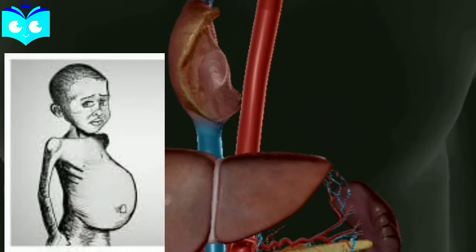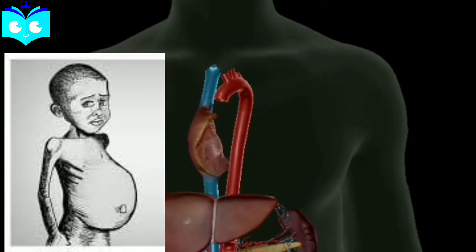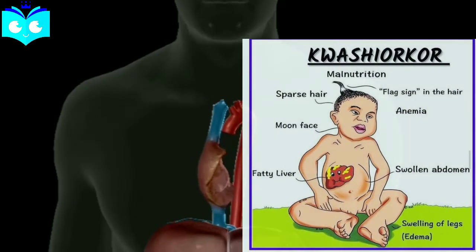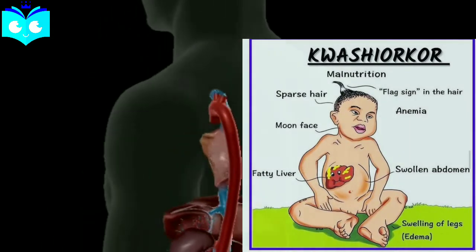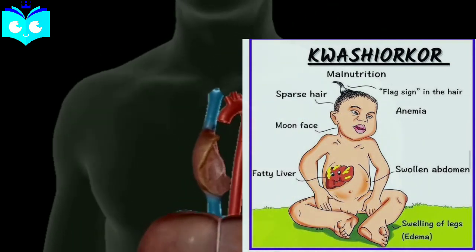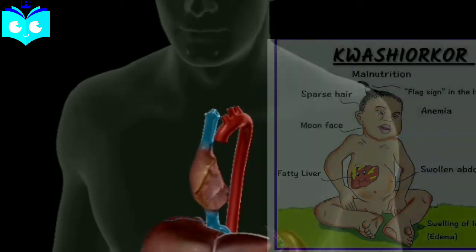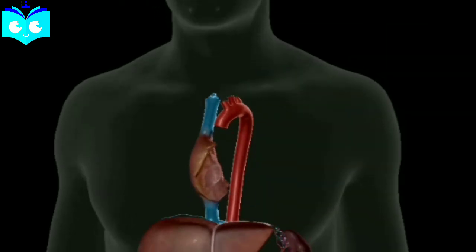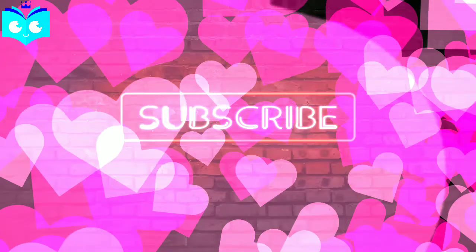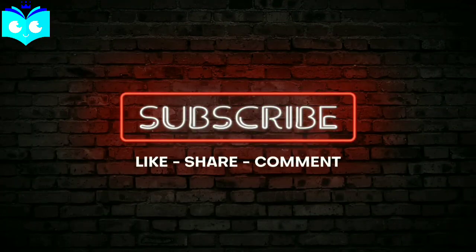Kwashiorkor is also a protein-energy malnutrition disease. It occurs from the replacement of mother's milk by a high-calorie but low-protein diet in a child more than one year of age. A diet that is mainly carbohydrates can lead to this condition. Extensive edema and swelling of body parts are seen in kwashiorkor. Like marasmus, kwashiorkor shows wasting of muscles, thinning of limbs, and failure of growth and brain development.